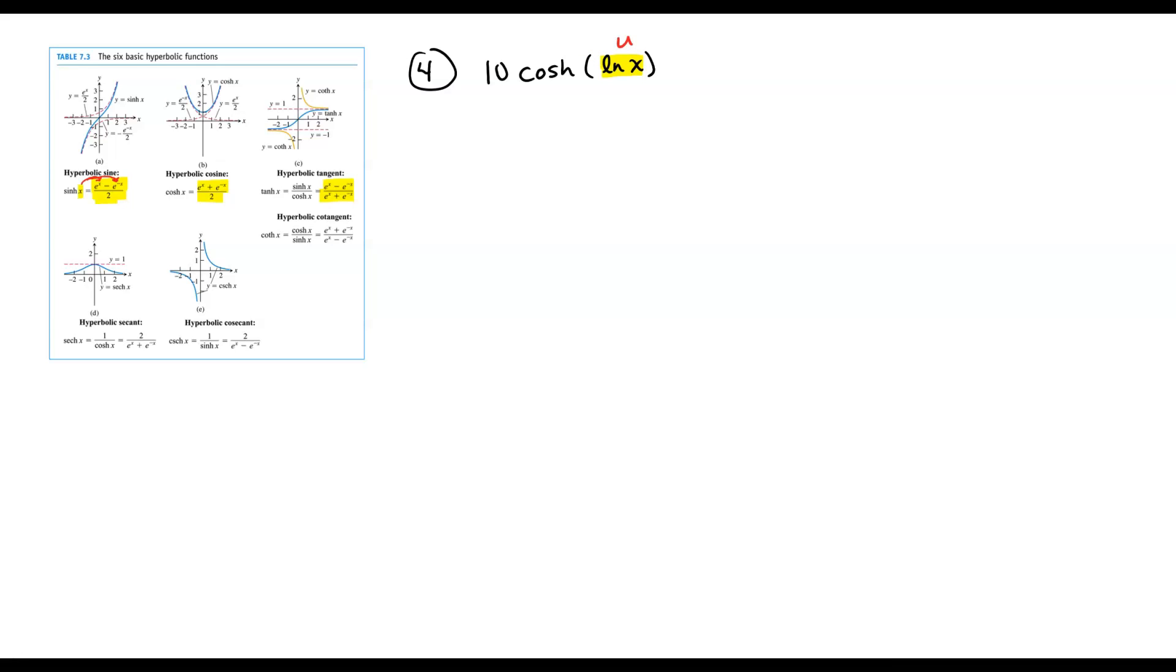I'm going to take 10, I'm going to multiply it by the rule for cosh, which is e to the x plus e to the minus x over 2. But instead of x, I will write whatever my u is. In this case, it's the natural log of x. And so, e to the natural log of x plus e to the negative natural log of x, all divided by 2, multiplied by 10 out in the front is what the exponential expression would look like.